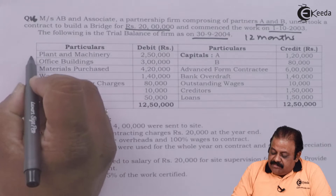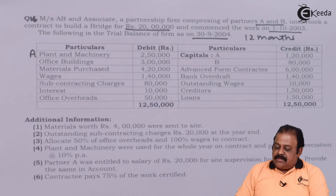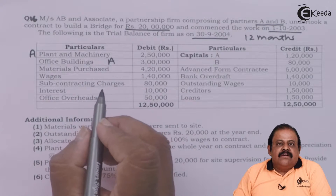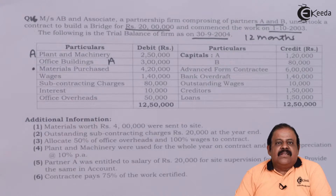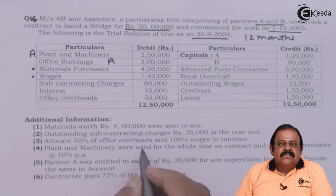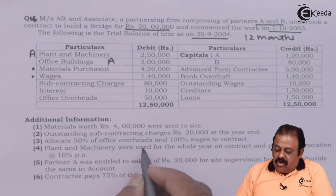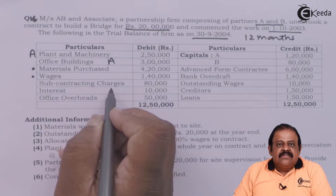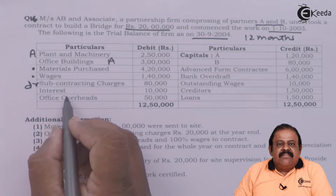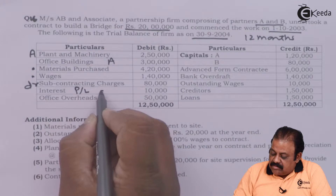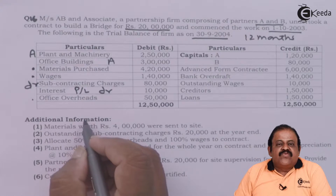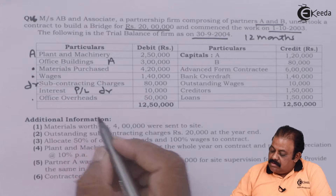Going through the trial balance items: plant and machinery will be recorded as an asset in the balance sheet; office building is also an asset. Material purchased is an expense — we are required to find out how much material is actually used for the contract. Wages are an expense — we need to find out how much wages are paid for the contract. Subcontracting charges are directly related to the contract and will be debited to the contract account. Interest will be debited to the profit and loss account. Office overheads — we are required to find out how much to apportion to the contract account.